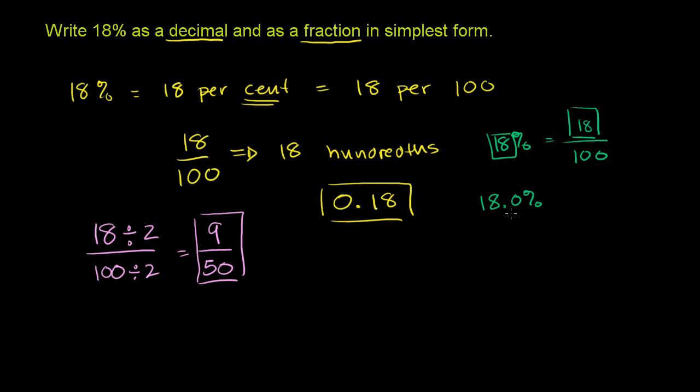...if you want to express this as a decimal without the percent, you just move the decimal to the left two spaces. So if we move the decimal to the left two spaces, 1, 2, this becomes 0.18.